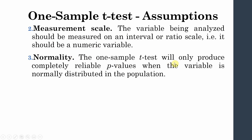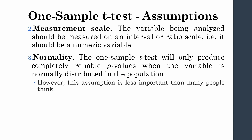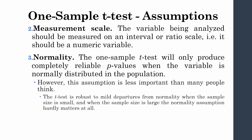The third assumption is normality. The one-sample t-test will only produce completely reliable p-values when the variable is normally distributed in the population. You can check normality using skewness and kurtosis. However, this assumption is less important than many people think. The t-test is robust to mild departures from normality, especially when the sample size is large, where the normality assumption hardly matters at all.